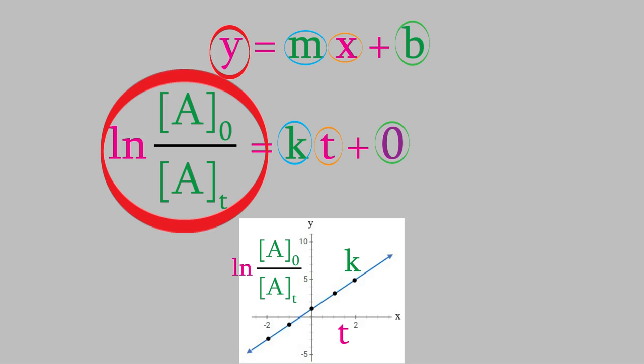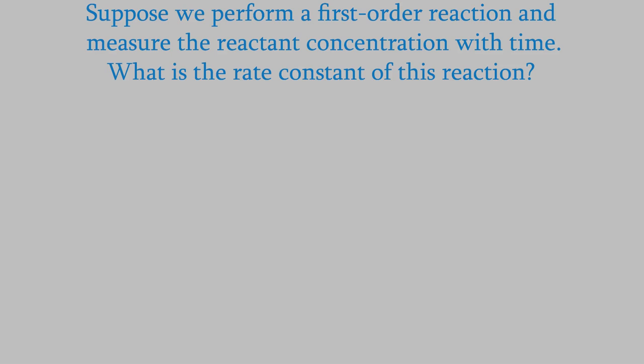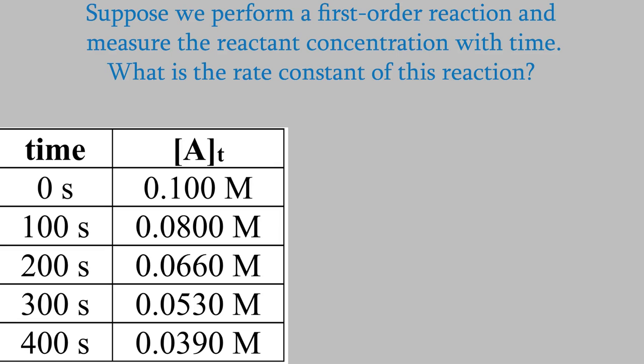That means that if we have data for a first order reaction, we should be able to make a graph with time on the x-axis and the logarithm term on the y-axis. That should give us a straight line with a slope equal to k, the rate constant, and a y-intercept of zero. Let's try it. Suppose we perform a first order reaction and measure the concentration of the reactant at different times. We can find the rate constant by making this graph — the slope of the line will be equal to the rate constant.